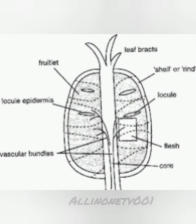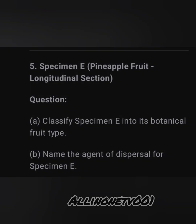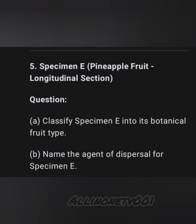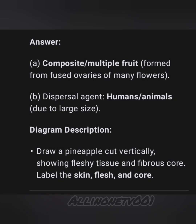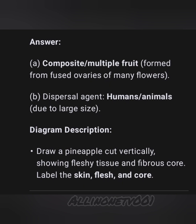Specimen E is a pineapple fruit longitudinal section. The diagram and image are on screen. Possible question A: classify specimen E into its botanical fruit type. Question B: name the agent of dispersal for specimen E. Answer A: composite or multiple fruit, formed from fused ovaries of many flowers. Answer B: dispersal agent is human or animal due to its large size.